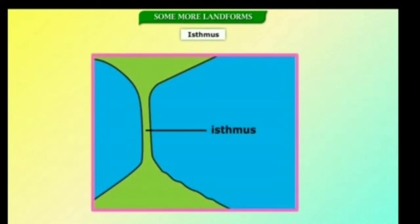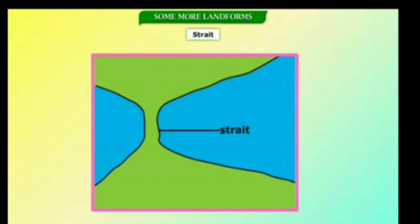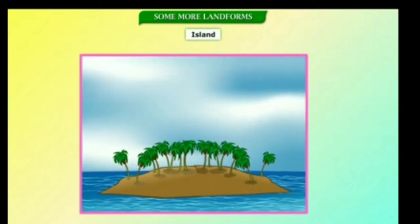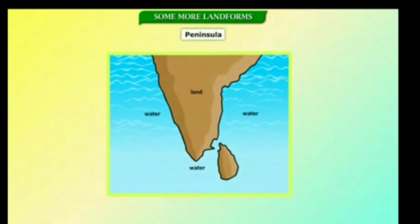An isthmus is a narrow piece of land connecting two landmasses with water on either side. A strait is a narrow channel of water that lies between two landmasses connecting two water bodies. An island is land surrounded by water on all sides. A peninsula is land surrounded by seas on three sides. The southern part of India is a peninsula. The largest peninsula in the world is the Arabian Peninsula.